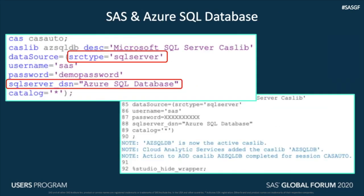Third, we are looking at the Azure SQL database. Here we use SAS Access Interface to Microsoft SQL Server. That is specified by setting the source type parameter to SQL Server. The connection information is added to the odbc.ini file, as seen by the SQL Server data source name parameter, which is set to 'Azure SQL database' in this example.